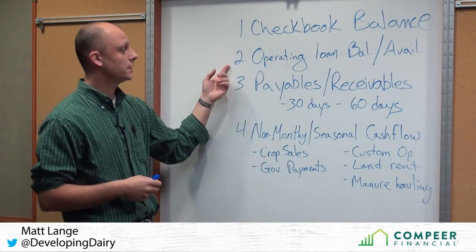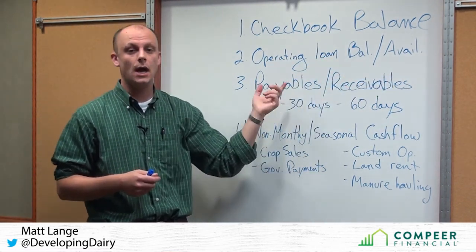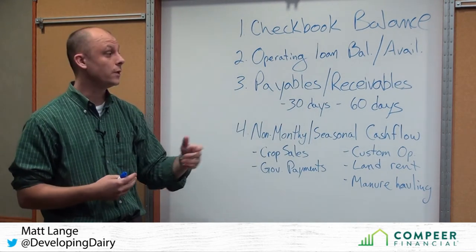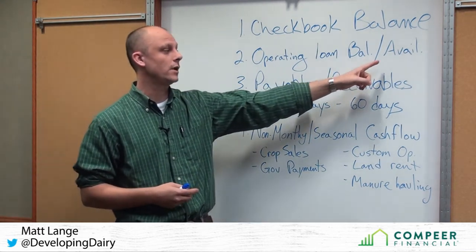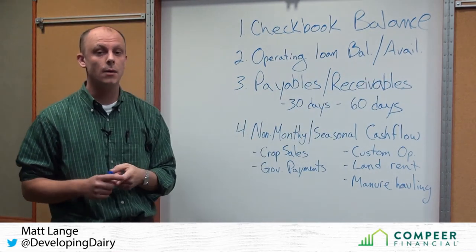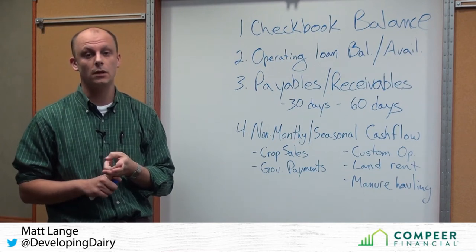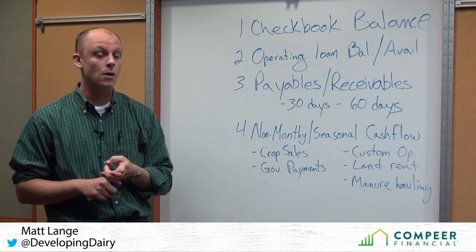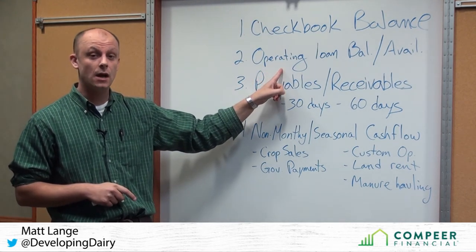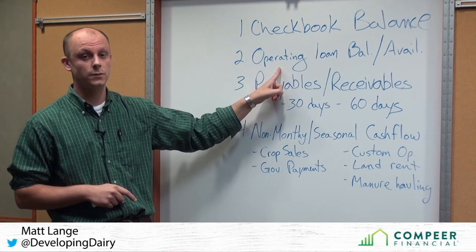The second item is our operating loan balance and availability. With the operating loan, it's not just where's our balance today, but if we do have some availability, how much do we have available to us? Is the operating loan also coming due, and should we be speaking to our lender about renewing that, or are we going to have the ability to either pay this down or not? These are critical elements as we move forward.